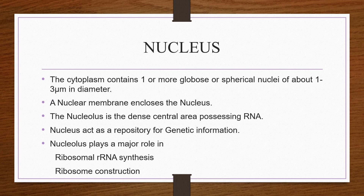Nucleus. Fungal cells, being eukaryotic, contain a well-developed nucleus. The cytoplasm contains one or more spherical nuclei, ranging from 1 to 3 micrometers in diameter. The nucleus is enclosed by a nuclear membrane. It is located in the central area and contains RNA. The nucleus is responsible for storing genetic information and plays a major role in the synthesis of ribosomal RNA and ribosome construction.